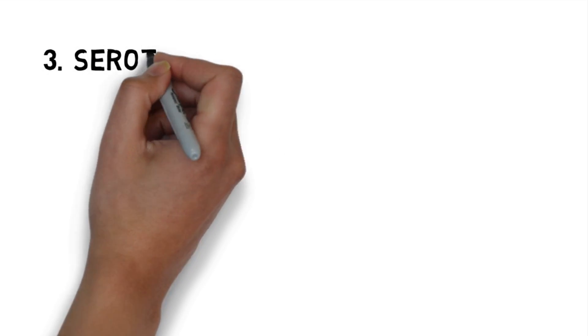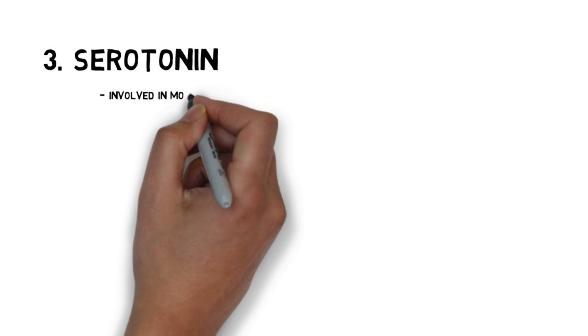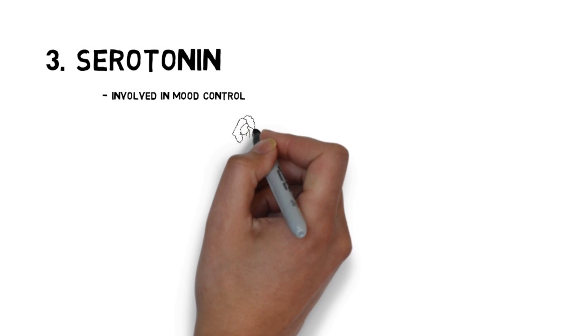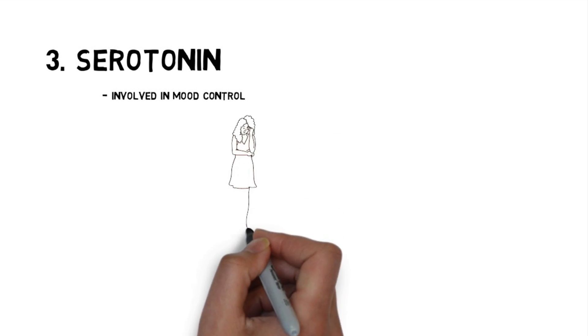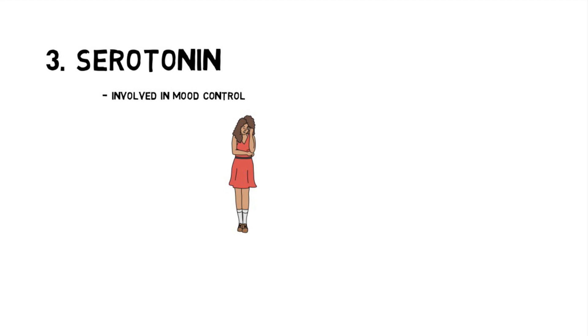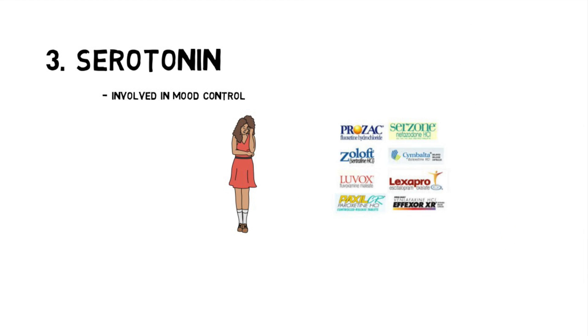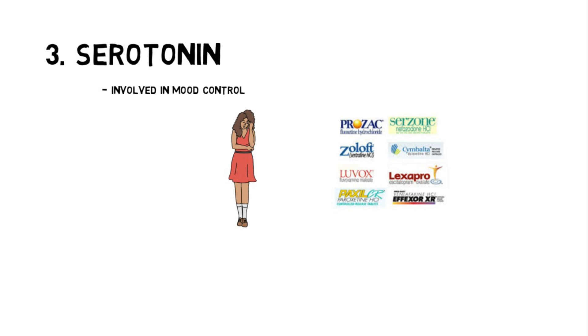Another neurotransmitter you should be aware of is serotonin. Serotonin is involved in mood control. Lack of serotonin has been linked to clinical depression. So if you're taking an antidepressant like Paxil or Prozac or Zoloft, then logically you would know that that drug probably increases serotonin levels in the synaptic gaps in our brain.